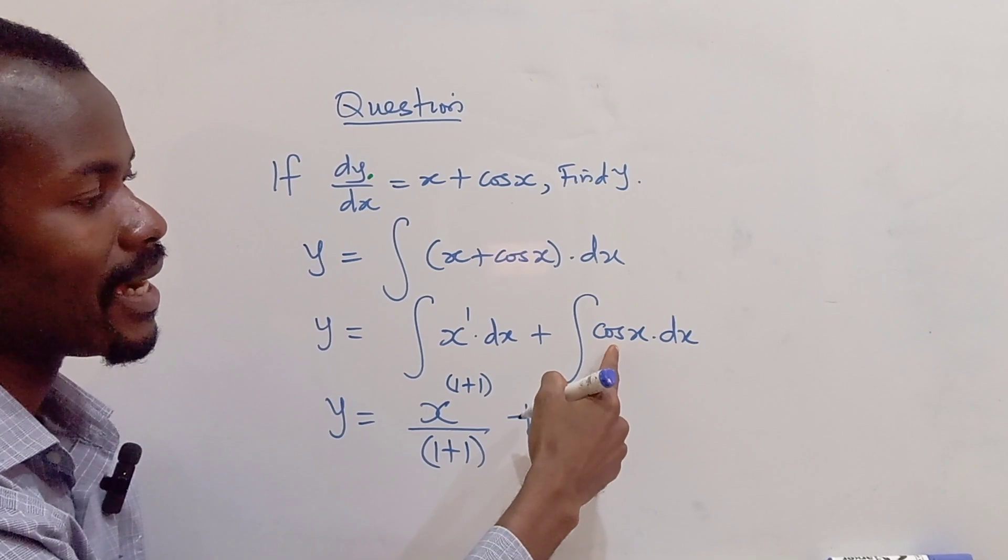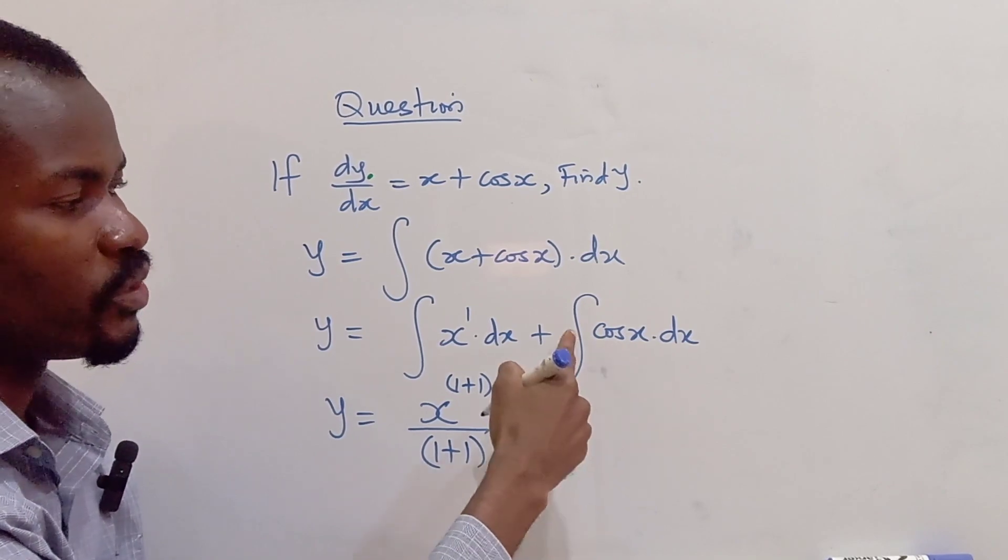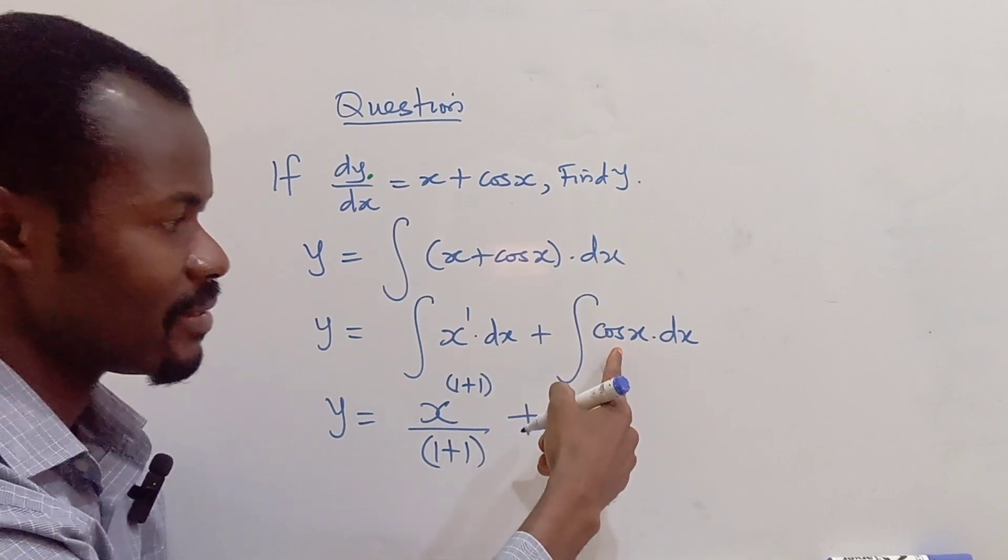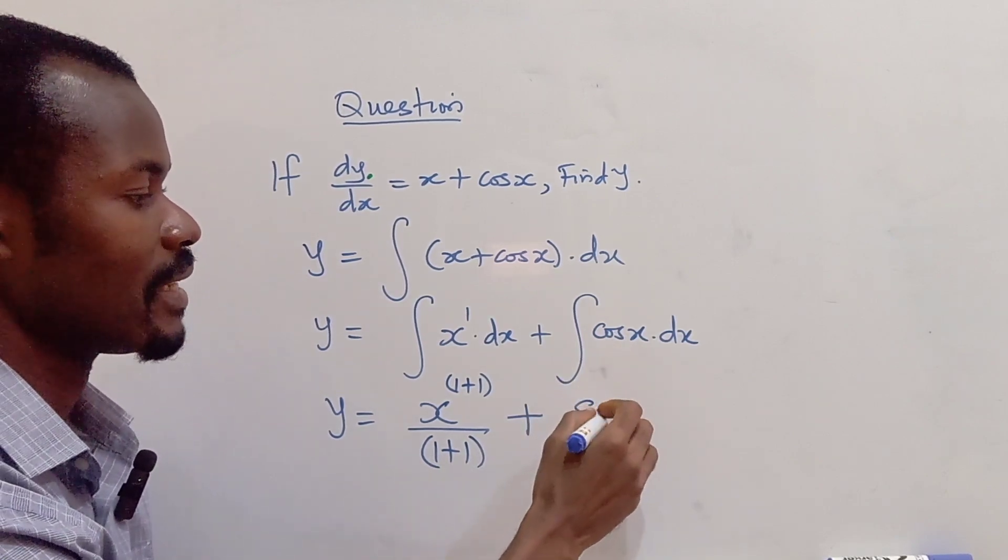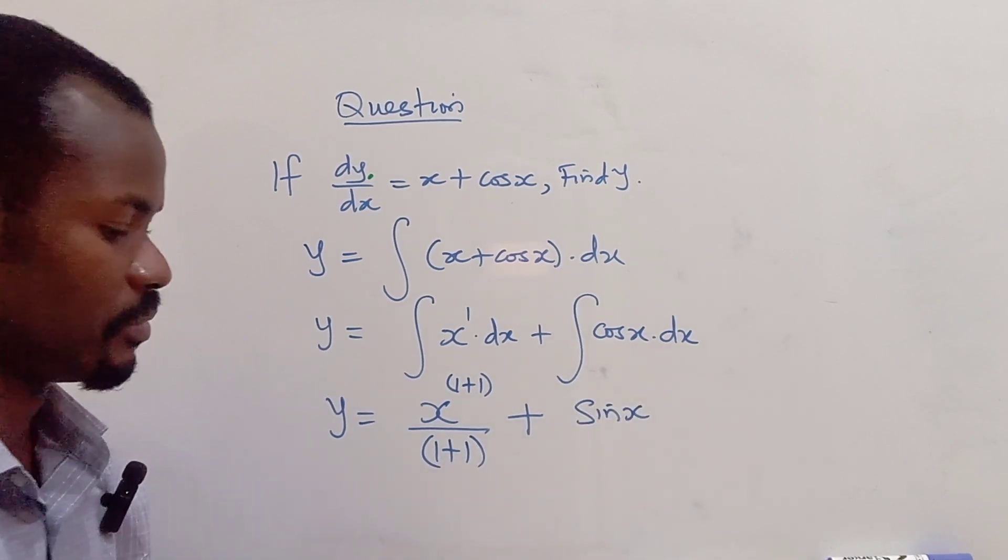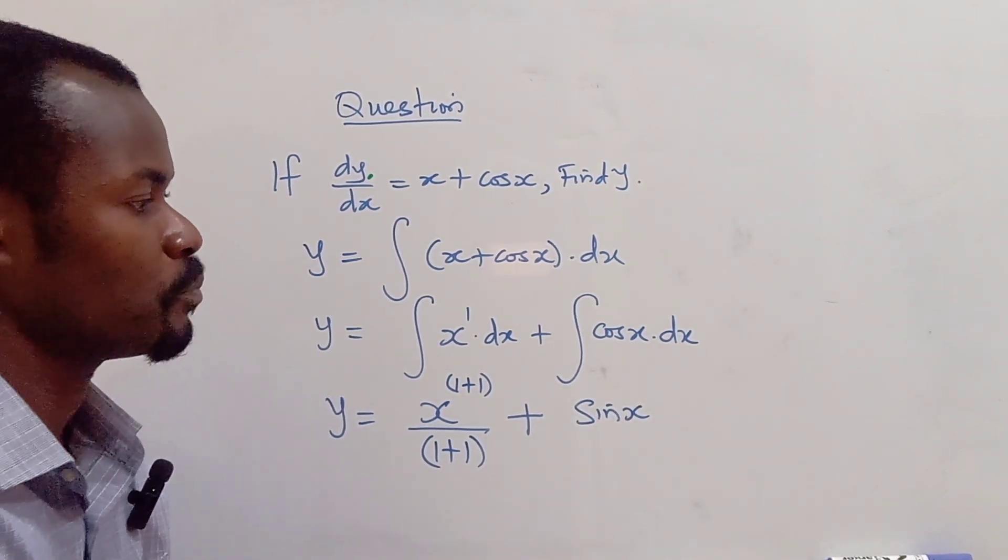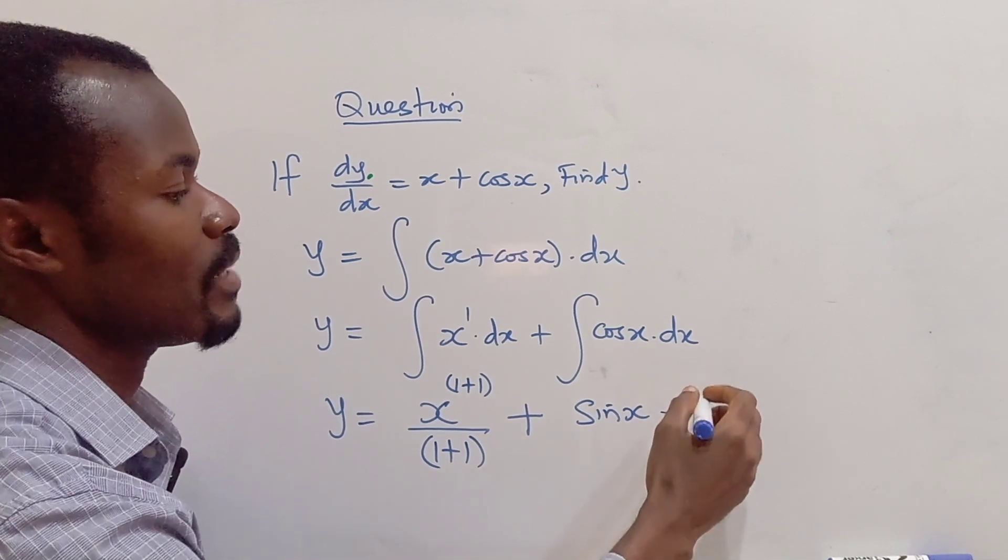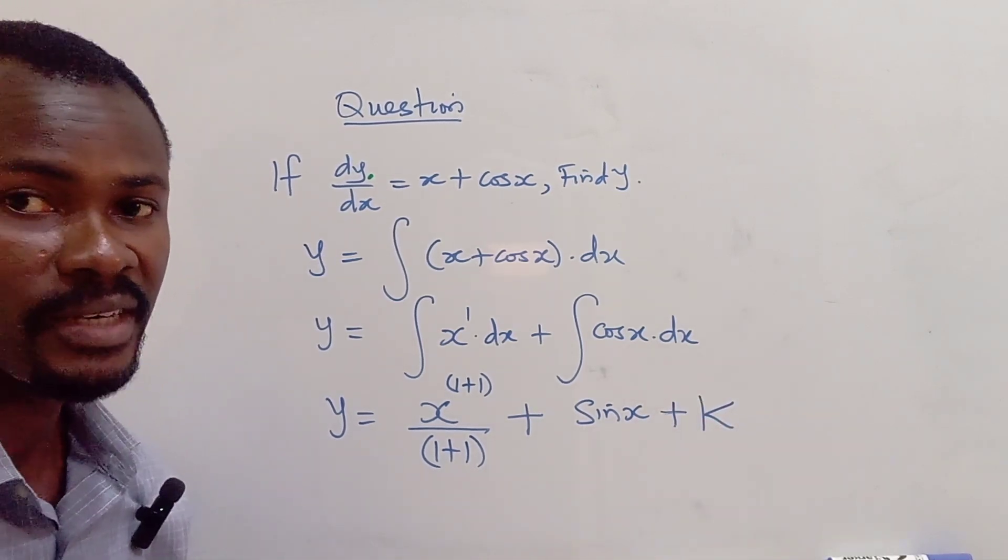Plus, now cos. When you integrate cos, standard integral, cos changes to sine x. So plus, we can now put a constant k, alright?